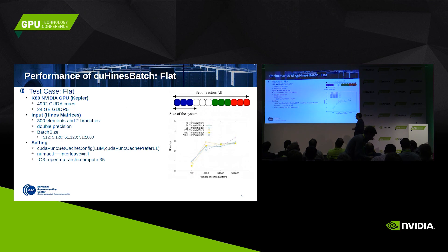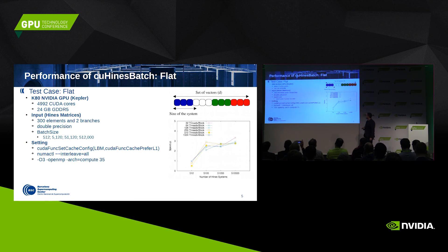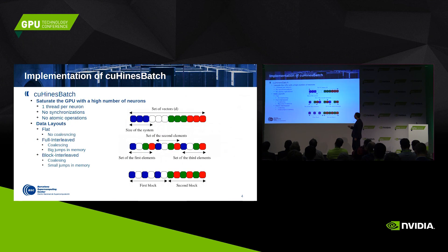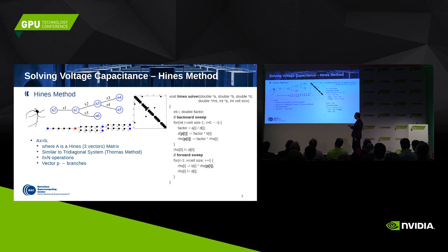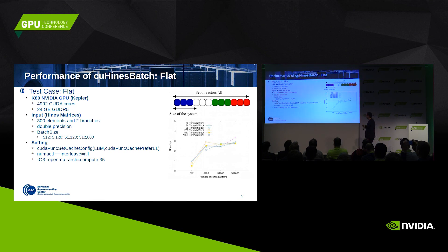We analyze the performance on both Pascal P100 and Kepler GPUs. For a simple test case with neurons composed of 300 elements and two branches, all elements in double precision at different batch sizes, we see that the flat data layout doesn't scale very well — we don't obtain any benefit in speedup against sequential code.